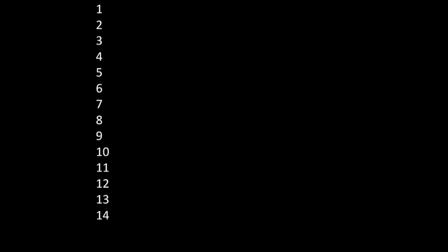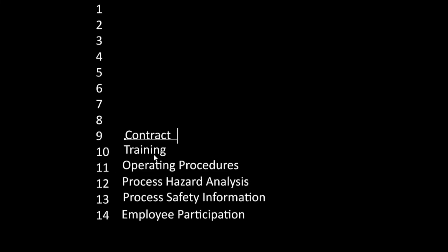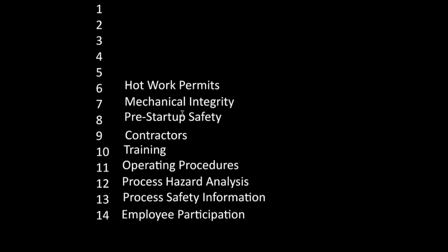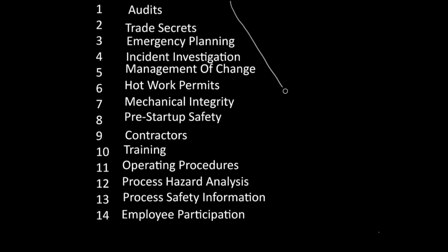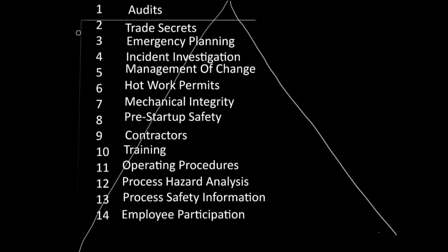PSM has 14 major sections: Employee Participation, Process Safety Information, Process Hazard Analysis, Operating Procedures, Training, Contractors, Pre-Startup Safety, Mechanical Integrity, Hot Work Permits, Management of Change, Incident Investigation, Emergency Planning, Trade Secrets, and Audits.